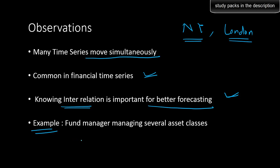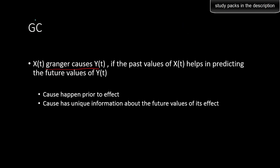One example could be a fund manager managing several asset classes — they will be very correlated. You can not only use the time series data for the same asset class; you can also use time series data for different other asset classes, which will help in predicting a given asset class's future values. That's exactly the reason why we need to understand what Granger causality is.